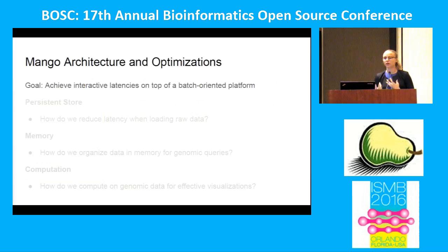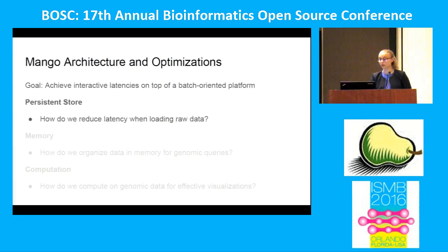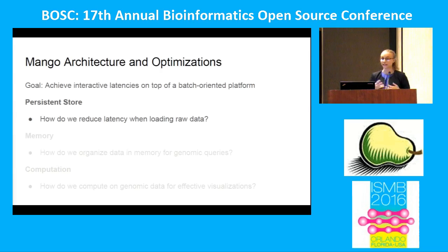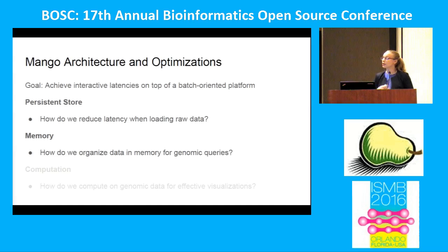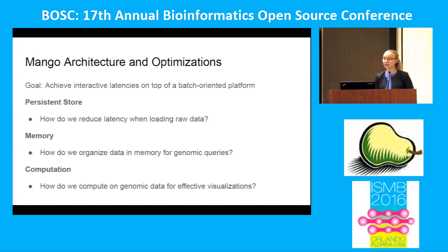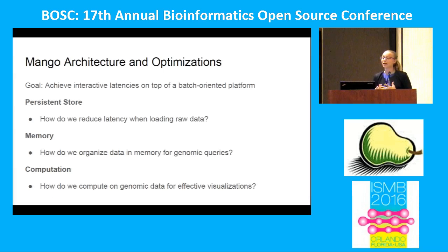Now I'll talk about the optimizations we had to make to support genomic queries in particular. The goal is to achieve interactive latency on that batch-oriented platform. A few questions we need to answer: how do we reduce latency when loading raw data initially? How do we organize data in memory to further reduce genomic query times? And how can we compute on genomic data to produce interesting visualizations and find interesting regions the user may not have been aware of?